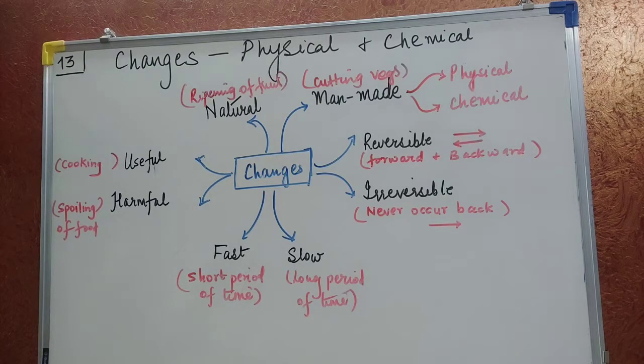I have made some very easy concept map. Because in this chapter you just need to know the terminology. So let us first come up to the two main important changes. Natural and manmade. As the word natural speaks, the changes which occur naturally. I have given you one example. Over here, ripening of fruit.